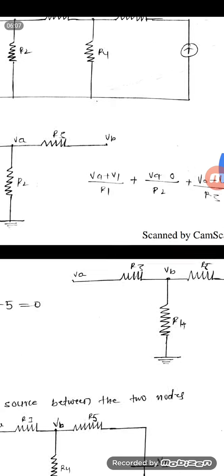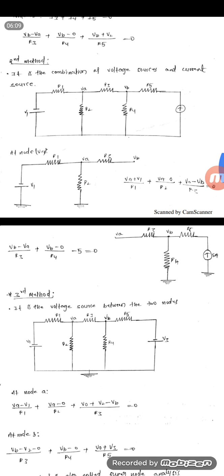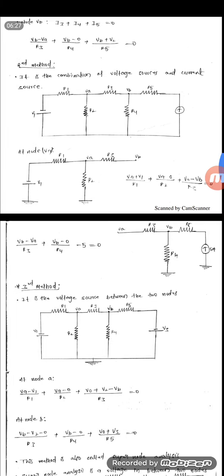When applying nodal analysis at a particular node, assume that node is the superior — that node is the boss. You have to subtract all other voltages from the reference node. Here the reference node is VA.